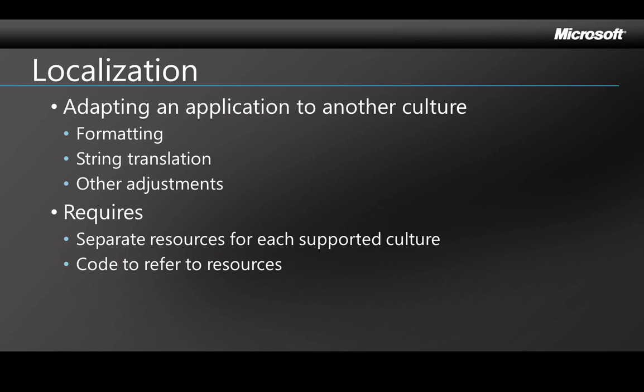In Windows Phone 7, you can create and save your string resources for your labels, for example, separately from your code. Then in your code, you just put a reference to the source of the resources, and that means that you can easily switch the whole app over to a different set of resources for a different culture without changing the rest of the code.